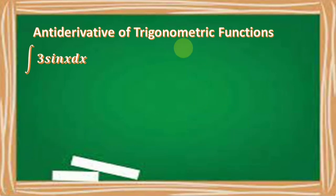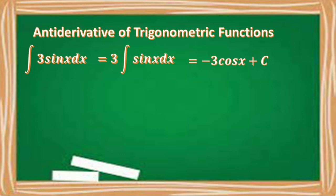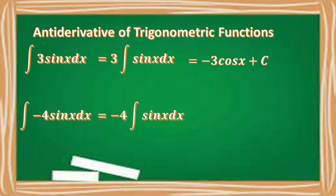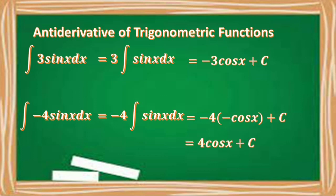For examples: the integral of 3 sine x dx equals 3 times the integral of sine x dx, which is equal to negative 3 cosine x plus C. Next, the integral of negative 4 sine x dx equals negative 4 times the integral of sine x dx, which is equal to negative 4 times negative cosine x plus C. Simplifying, negative 4 times negative cosine x gives 4 cosine x plus C.